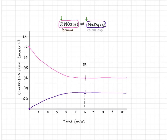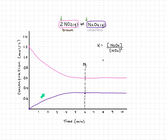We can use any point where the lines are flat to calculate the K value. K equals the concentration of our product, dinitrogen tetraoxide, divided by the concentration of our reactant, nitrogen dioxide, squared because of the coefficient of 2. Reading off the graph: NO₂ is 0.6 mol/L and N₂O₄ is 0.3 mol/L. Plugging those in: 0.3 divided by (0.6)², which gives us 0.8̄3̄.